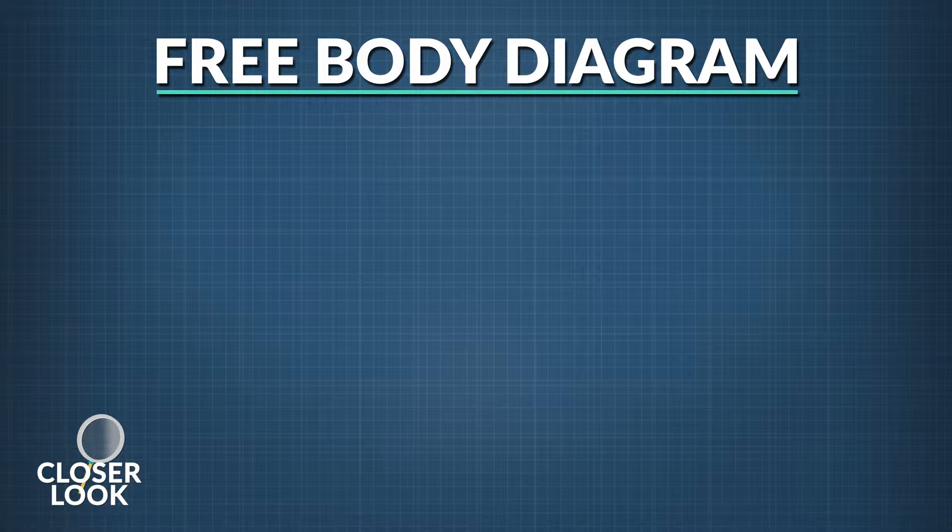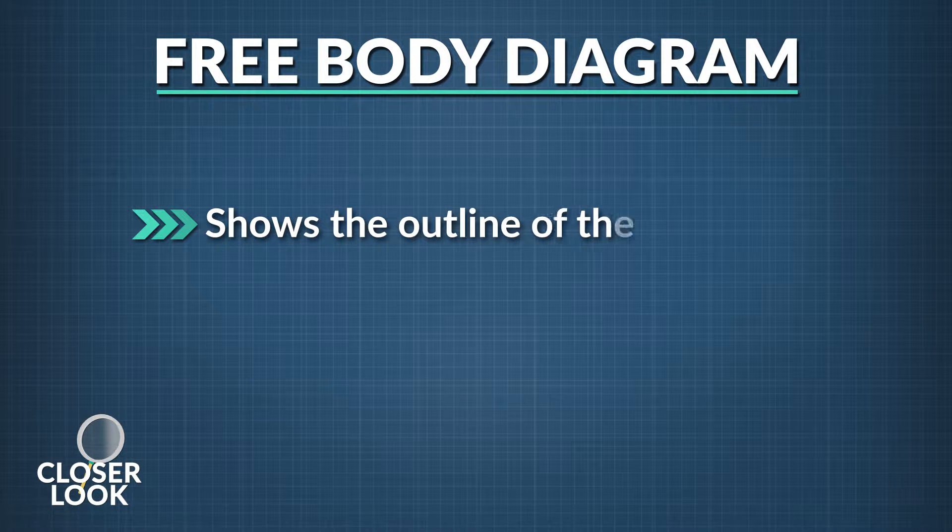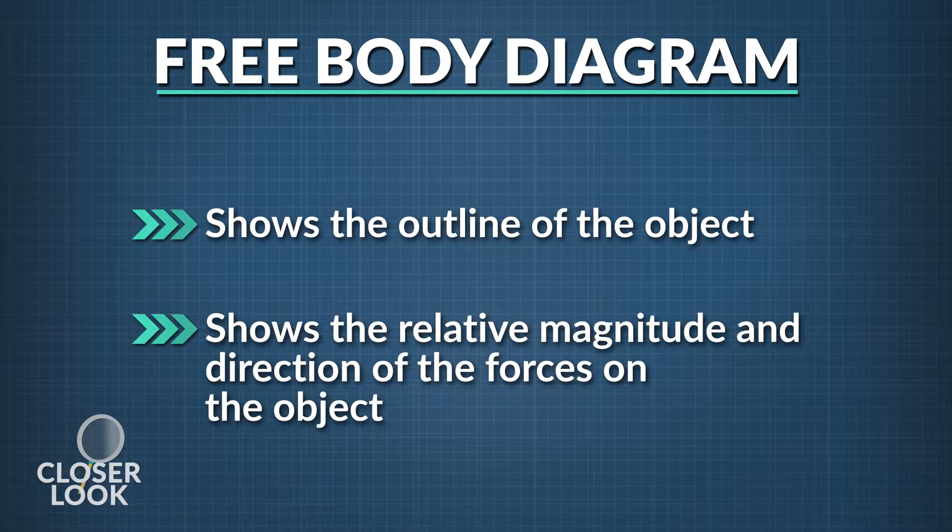To show what forces are acting on an object, we draw what's called a free body diagram. A free body diagram shows two things: the outline of the object or body, and the relative magnitude and direction of any forces acting on that object.